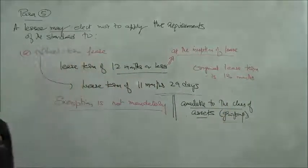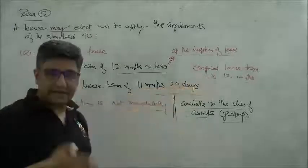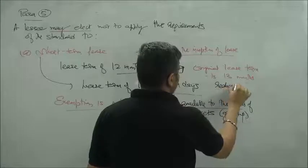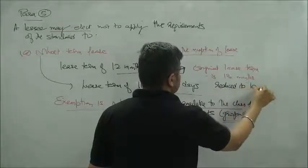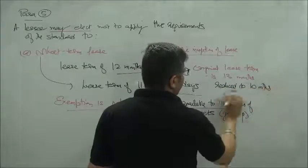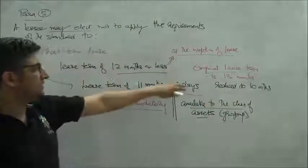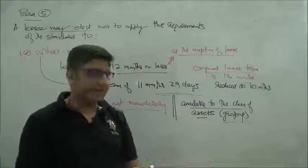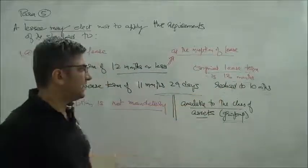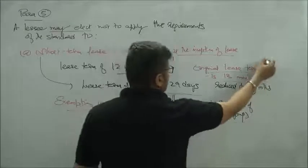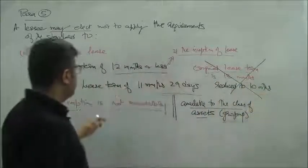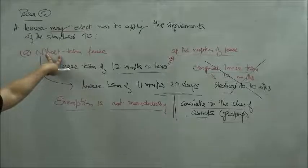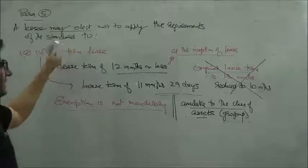...this lease term is later reduced to 10 months. The moment it says 13 months at inception but is later reduced, the contract is already in place and this exemption cannot be availed because it's only available at the starting point, not later.